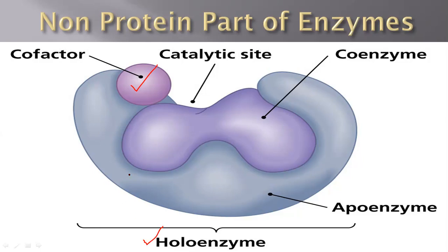If the cofactor is not available, the remaining protein part of the enzyme becomes catalytically inactive. Some enzymes only perform their function in the presence of a cofactor; if the cofactor is not available, the enzyme can no longer carry out metabolic activities and is of no use. That enzyme is called an apoenzyme. On the other hand, some enzymes do not require a cofactor and can still show active and inactive sites — here the catalytic site is where the substrate will bind.